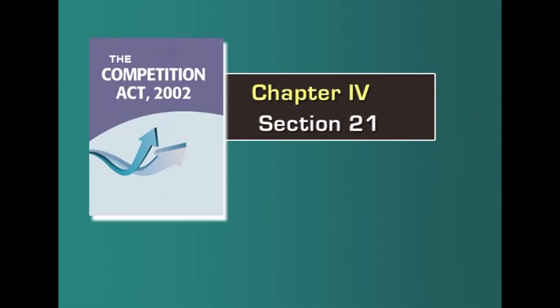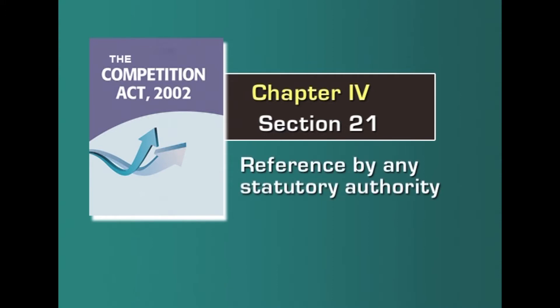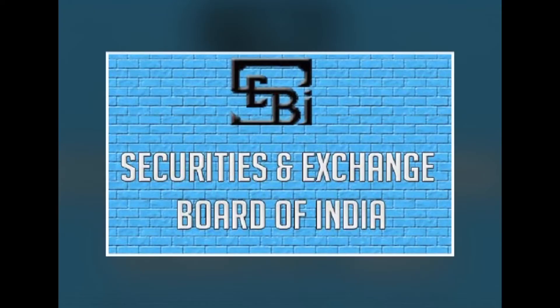The first section I am going to discuss is Section 21, which deals with reference by any statutory authority. Statutory authorities are regulatory bodies created by law — for example, the Securities and Exchange Board of India (SEBI). Whenever a company goes for a public issue or undergoes a merger or amalgamation, SEBI grants approvals. If SEBI comes across an issue which contravenes the provisions of this act, then such statutory authority may refer the issue to the commission for its response.